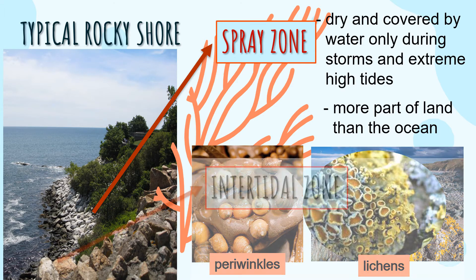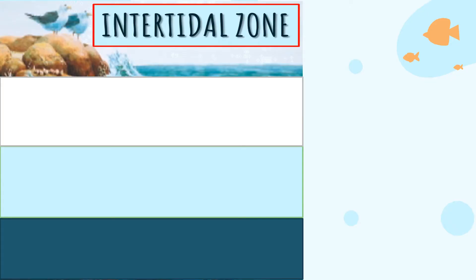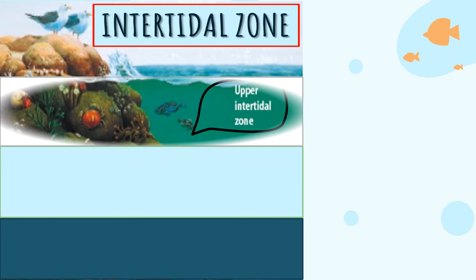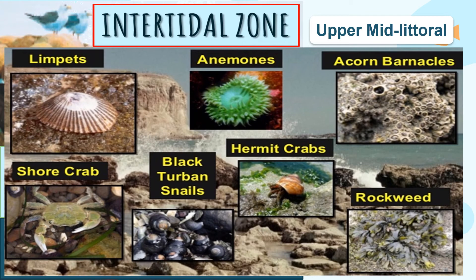The second is the intertidal zone itself, which lies between the extremely high and low tide. Just like estuaries, intertidal zones also have sub-zones. The first is the upper intertidal zone, also called the upper mid-littoral zone. The high tide zone is an area flooded only during high tide and can be out of water for a while.